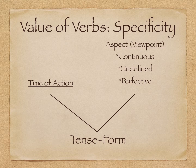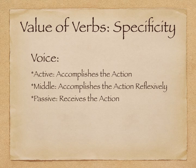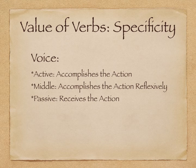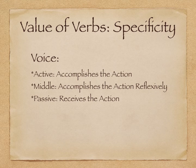These ideas of person, number, and tense form provide specificity, but also voice. Verbs can be active — the subject accomplishes the action. Middle — the subject accomplishes the action reflexively, done for himself, herself, or themselves, or done upon them. Or passive — the subject receives the action, as in 'John was hit by the ball.' These ideas of person, number, tense form — which includes both time and viewpoint or aspect — and voice are all part of what makes Greek verbs and verbals specific both to the subject and to the exact idea the author or speaker wishes to communicate.